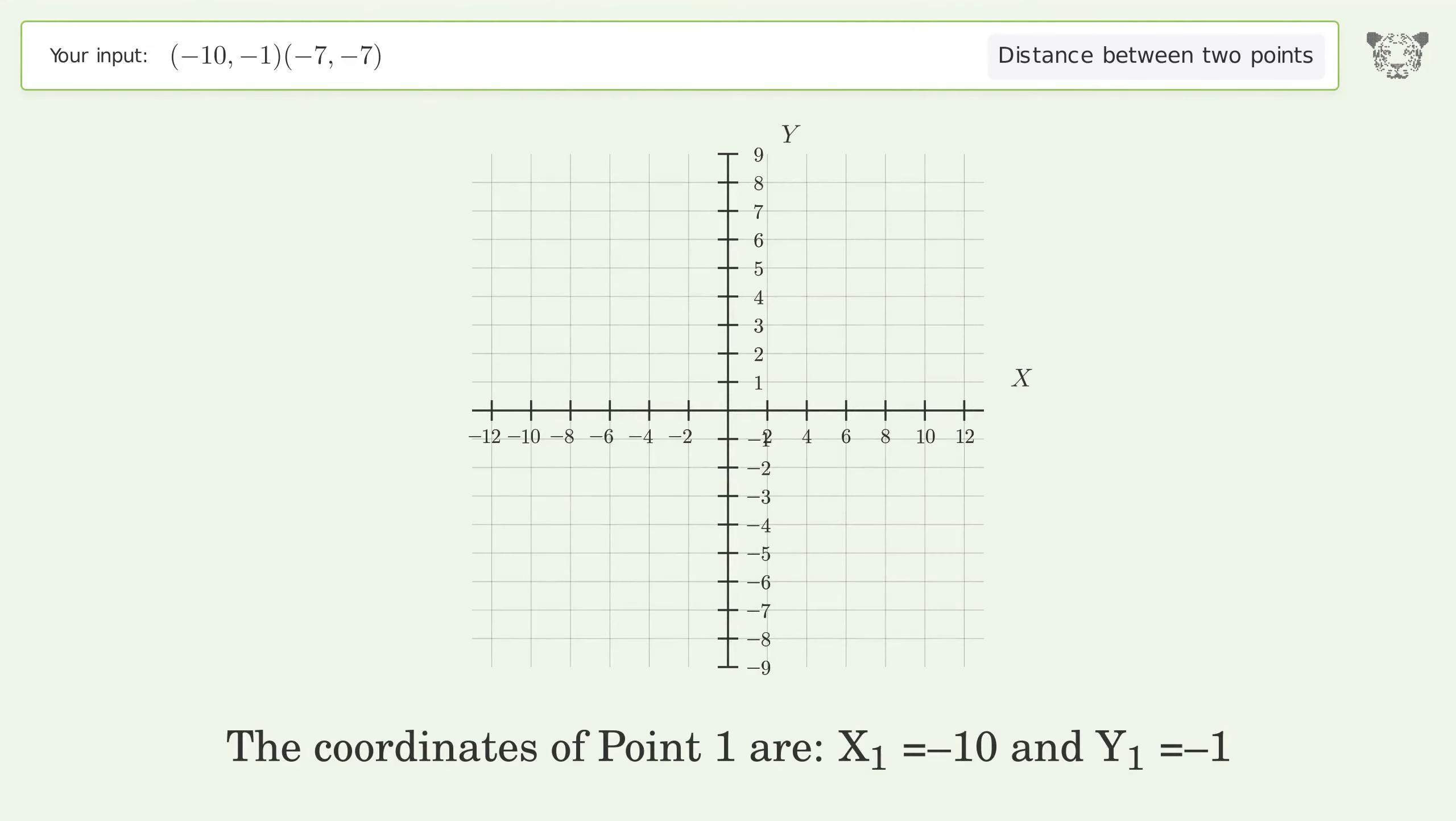The coordinates of Point 1 are x1 equals negative 10 and y1 equals negative 1. The coordinates of Point 2 are x2 equals negative 7 and y2 equals negative 7.